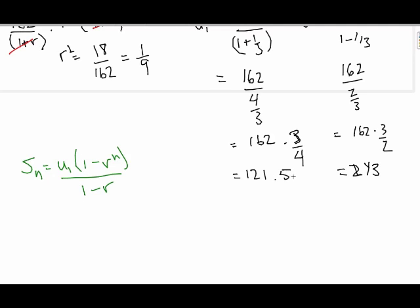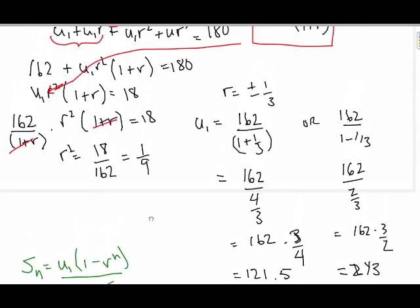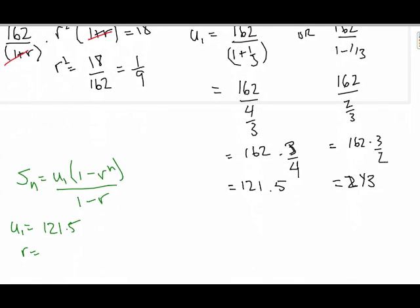I have two different values for R and for U1. If I have U1, I get 121.5, and that was when R was positive 1 third. And I'll also do it if U1 equals 243, where R is equal to negative 1 third. And I'm looking for n equal to 6.